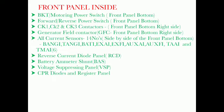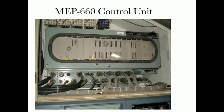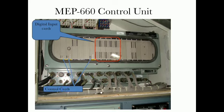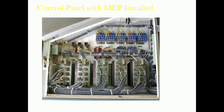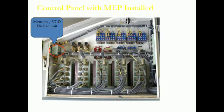Generator Field Conductors GFC, front panel bottom right side. All current sensors are 14, side by side of the front panel bottom: BANGI, TANGI, BATI, EXAI, EXFI, AUXAI, AUXFI, TAAI and TMAI. Reverse Current Diode Panel, Battery Ammeter Shunt, Voltage Suppressing Panel, CPR Diodes and Resistor Panel.